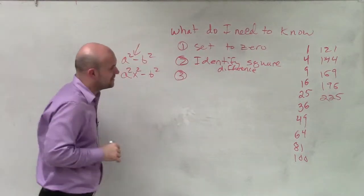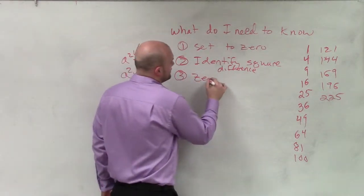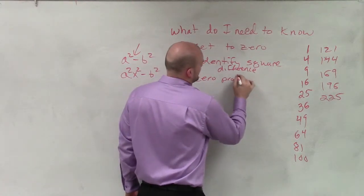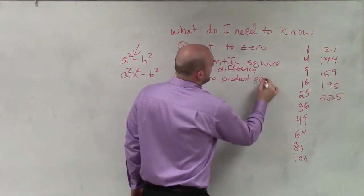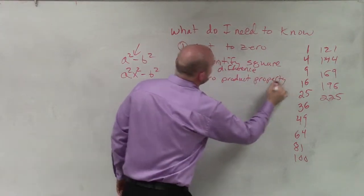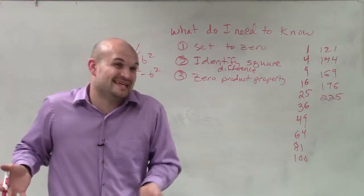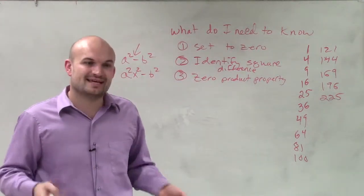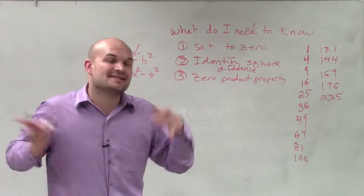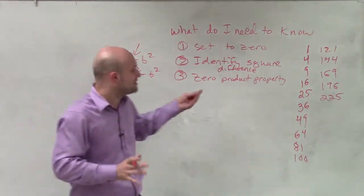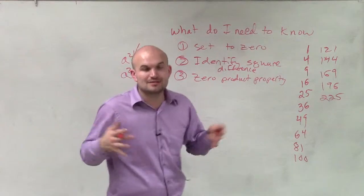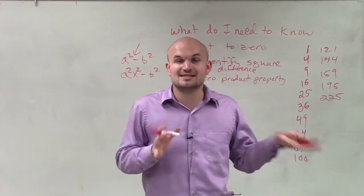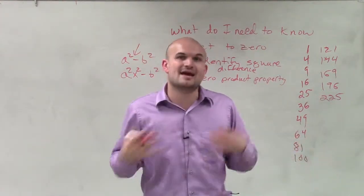And the last step for number three is make sure you can solve by the zero product property. Now, again, going back to the square root method, a lot of students like the square root method, and for some problems it might be easier to do that. But a lot of students forget to include the plus or minus. The zero product property helps you with that, because when we set both factors equal to zero, we automatically, using our inverse operations, find the positive and the negative values.